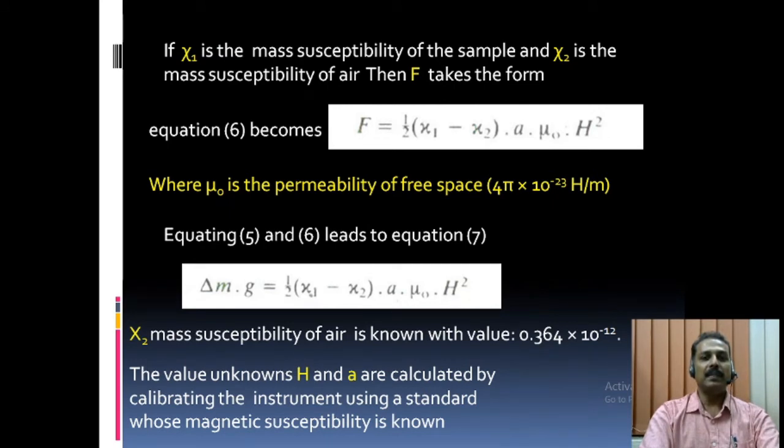If chi 1 is the mass susceptibility of the sample and chi 2 is the mass susceptibility of air, then force takes the form given by equation 6: equal to half into chi 1 minus chi 2 into area of cross-section into mu 0 into H square, where mu 0 is the permeability of free space. Equating 5 and 6 leads to equation 7, which can be represented as delta M into G is equal to half into chi 1 minus chi 2 into A into mu 0 into H square. The value of unknowns H and A are calculated by calibrating the instrument using a standard whose magnetic susceptibility is known.